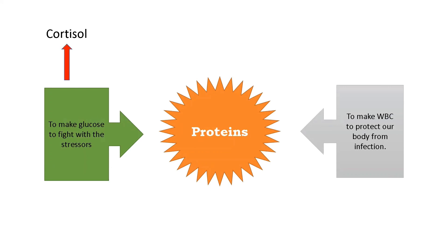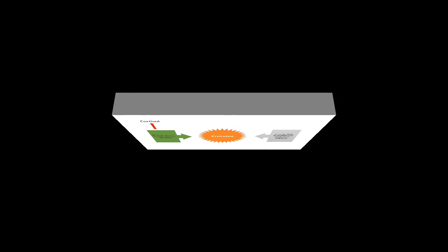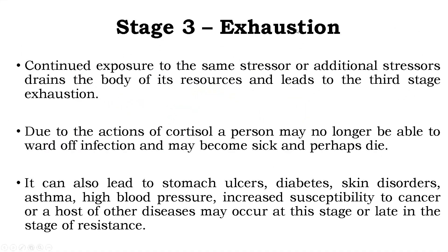Because the body is unable to protect itself from infections — having used up so much glucose — the person enters Stage 3: Exhaustion. In the Exhaustion Stage, the body's resources for coping with stress are completely used up. Due to the sustained action of cortisol, the person may no longer be able to ward off infection and may become sick, and in severe cases this can even result in death. It can also lead to stomach aches, ulcers, diabetes, skin disorders, asthma, high blood pressure, and increased susceptibility to cancer or a host of other diseases.